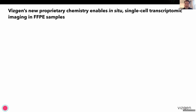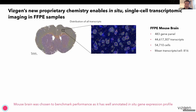Within Vizgen, we have developed a new chemistry to enable single-cell in situ transcriptomic imaging in FFPE samples. To demonstrate how this works, we first chose mouse brain to benchmark and evaluate the performance of our chemistry. The reason is that mouse brain has very well-annotated gene expression profiles for different biomarkers, allowing comparison with publicly available datasets, and there are already many spatial genomics measurements on brain samples from other technologies to benchmark against.